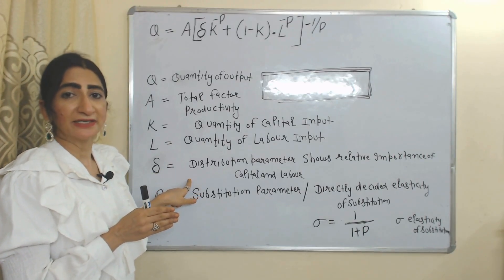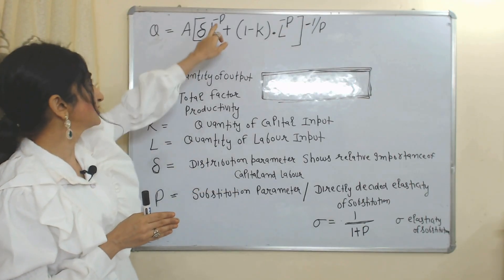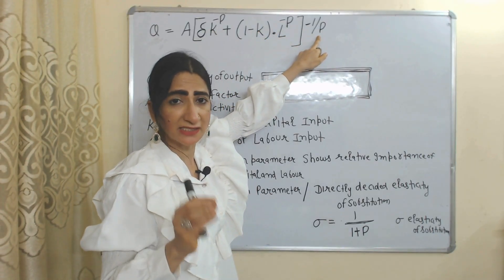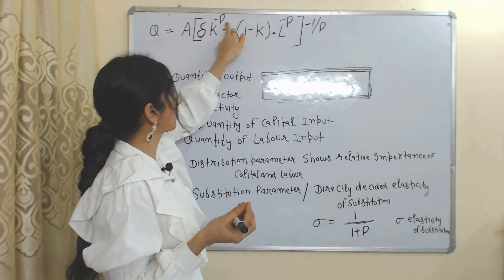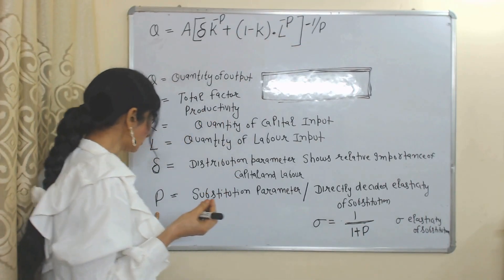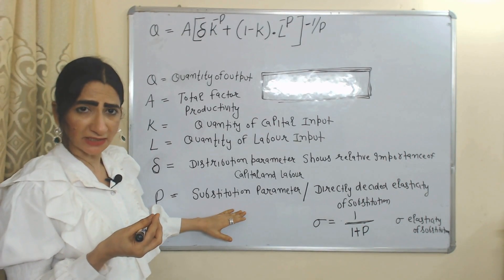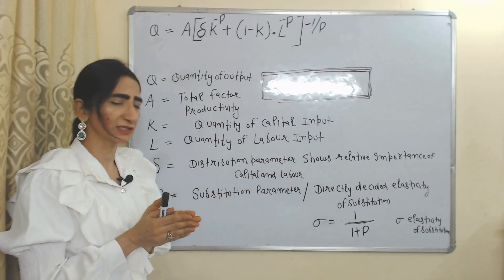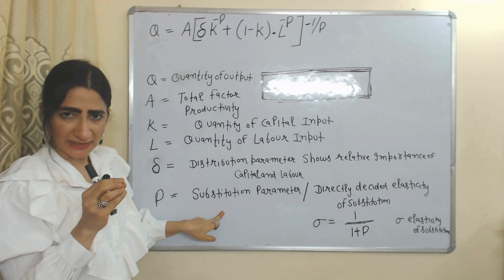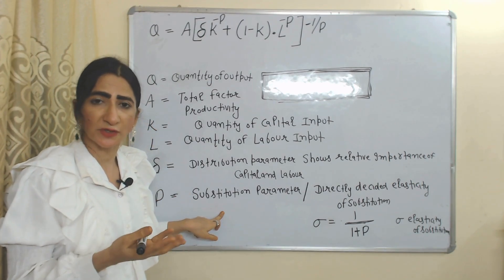This symbol is rho (ρ) — in math we represent rho like this. Rho is the substitution parameter, and the substitution parameter directly decides the elasticity of substitution.